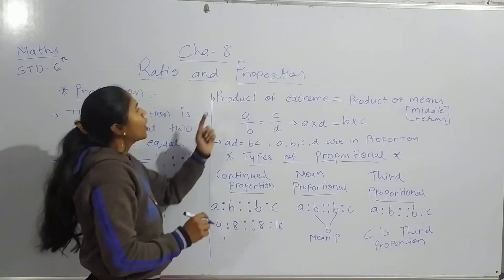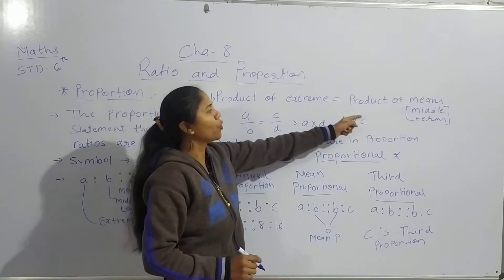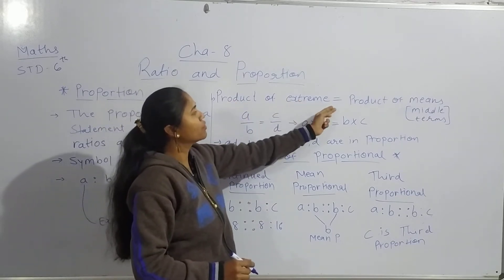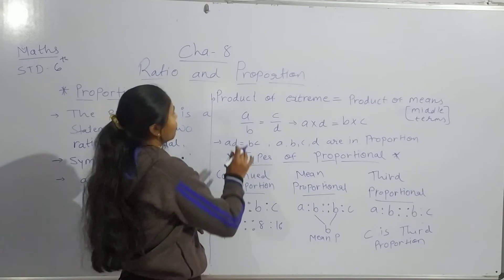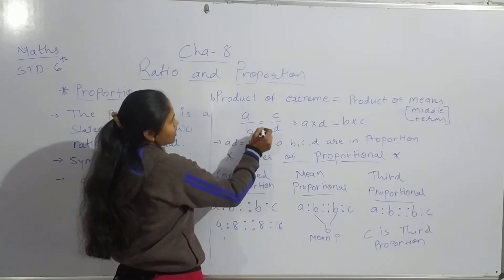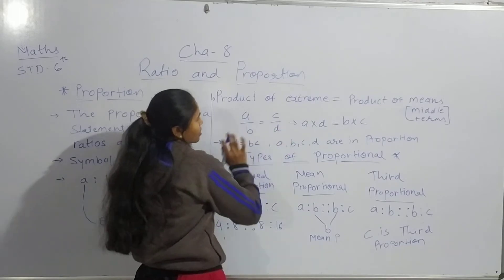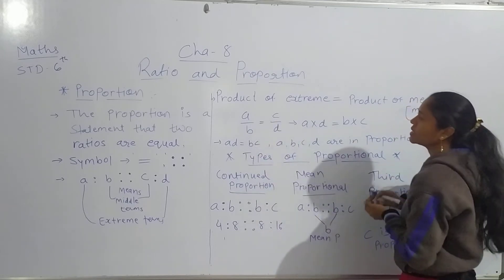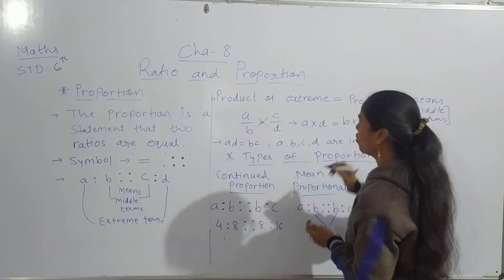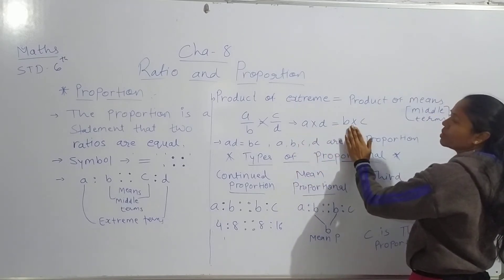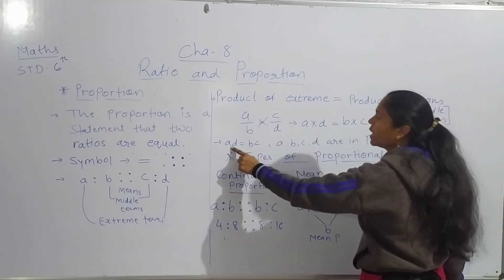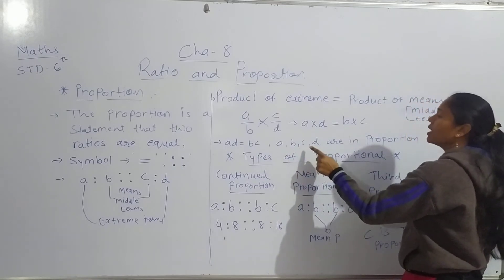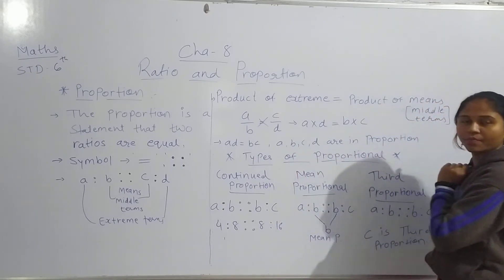What is the formula? Product of extremes is equal to product of means. Now, a divided by b is equal to c upon d. Do cross multiplication: a multiplied by d and b multiplied by c. So if a·d is equal to b·c, then we can say that a, b, c, d are in proportion.